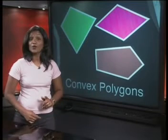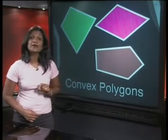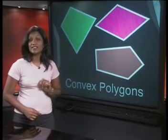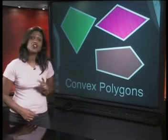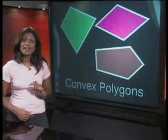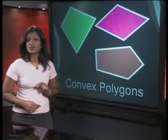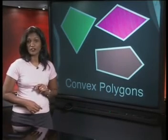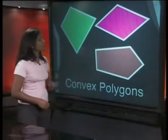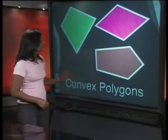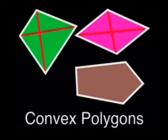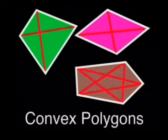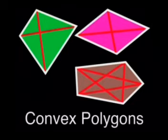A polygon can also be named according to where its diagonals lie. A polygon is called convex if no diagonal is outside the polygon. Look at the polygons in this diagram and look at where the diagonals lie. For each polygon, all the diagonals lie inside the polygon. Each polygon is therefore convex.